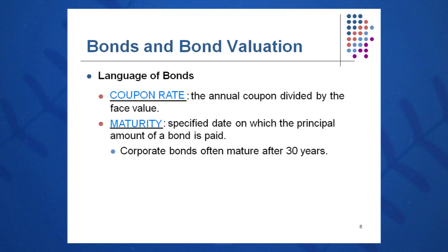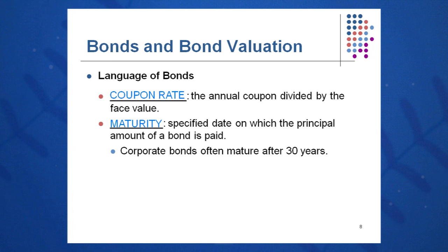Here's a sample bond I'll call the Coleman bond. It has an 8% coupon rate, and you can see the $80 coupon dangling at the bottom. We tear those coupons off and go to the paying agent to cash them in. The coupon rate is 8%. This bond will mature in 30 years — so if bought in 2010, it would mature in 2040 — which is the typical term for a corporate bond.